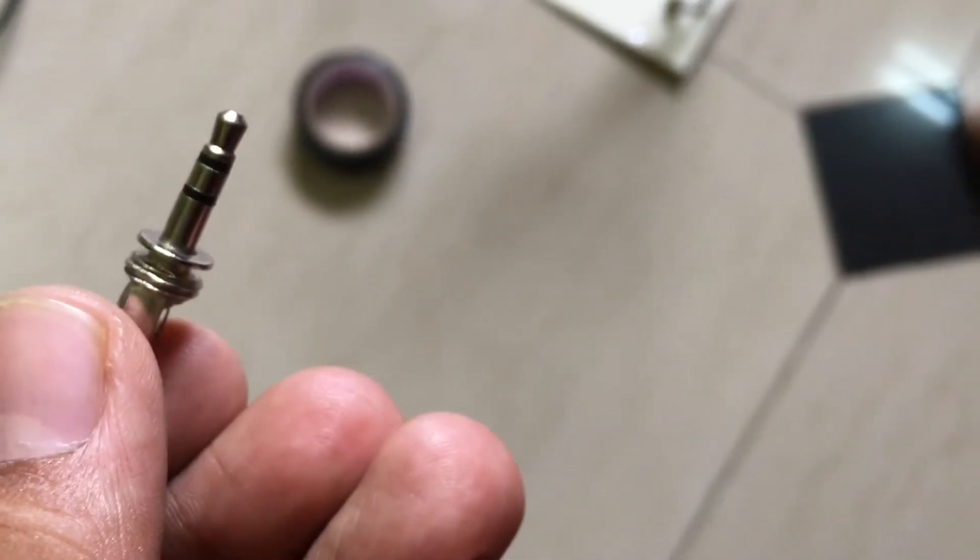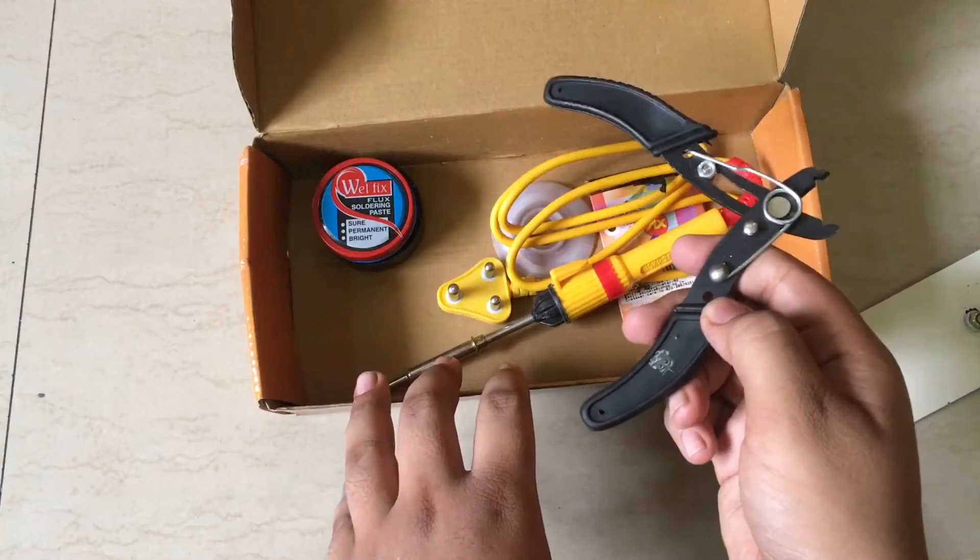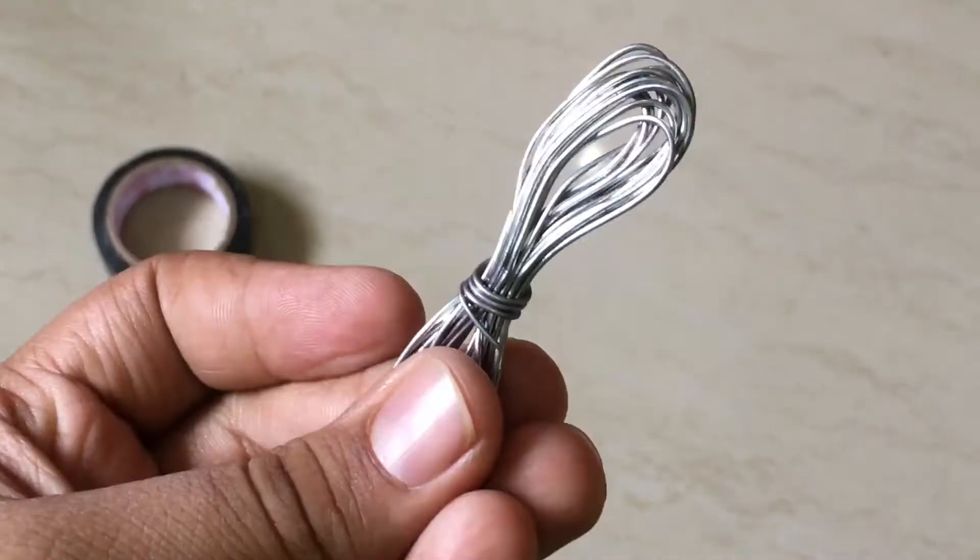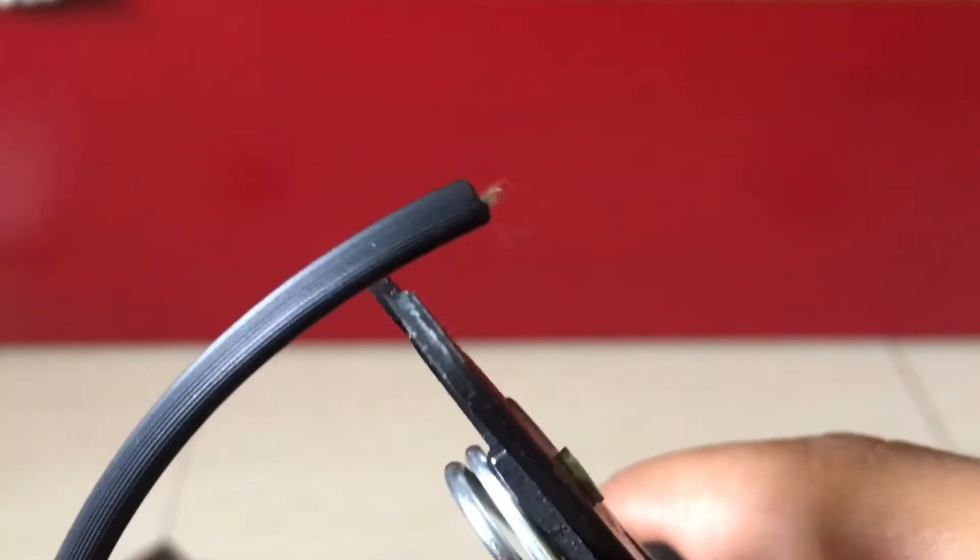The tools you need are a soldering iron, a wire stripper, some solder, and some insulating tape. First, strip the casing to reveal the actual wire.